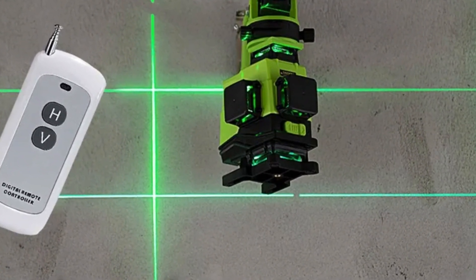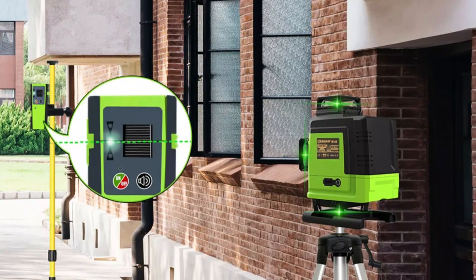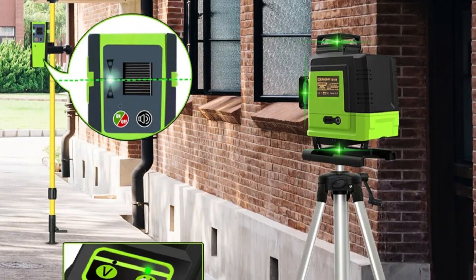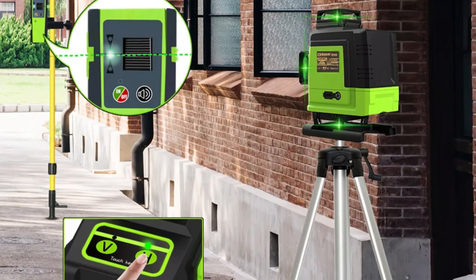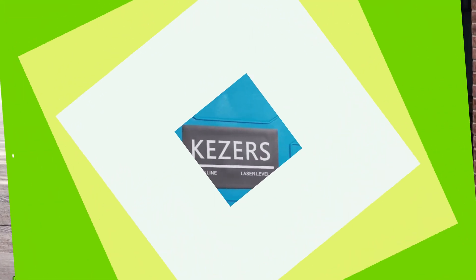With a working temperature range of minus 10 degrees centigrade to 50 degrees centigrade, and a storage temperature range of minus 20 degrees centigrade to 70 degrees centigrade, the Klubiona IAE 16R Laser Level is a reliable and durable tool for various environments.